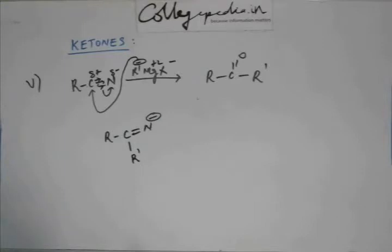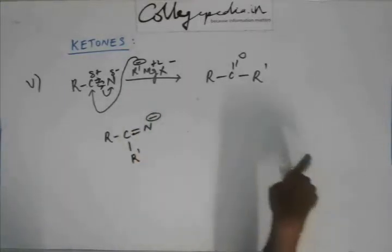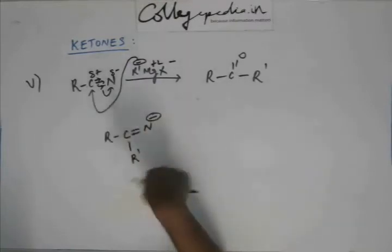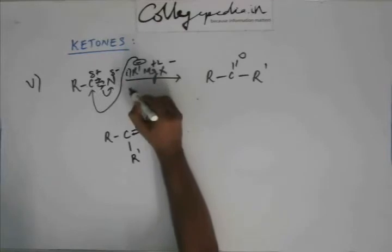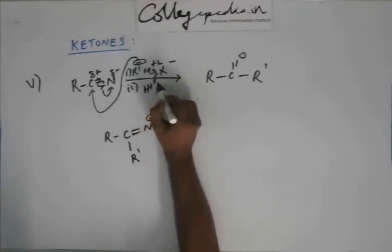So, nitrogen has N minus, a negative charge on nitrogen, and R minus will form a bond with carbon like this. Now, there will be no more attack because now this intermediate has a negative charge and that R minus will not approach this. Negative don't approach negative. The reaction will stop here. So, on subsequent hydrolysis.